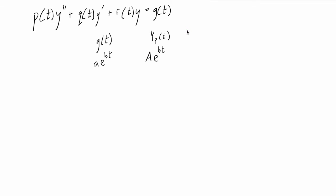The way we do that is by taking the derivative yp prime of t, then taking the second derivative yp double prime of t, and plugging them all into the original differential equation — yp where y goes, the first derivative where y prime goes, and the second derivative where y double prime goes. We'll have exponentials on both sides, and everything reduces down nicely so we can solve for the coefficient A and determine the particular solution.